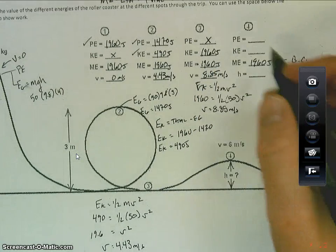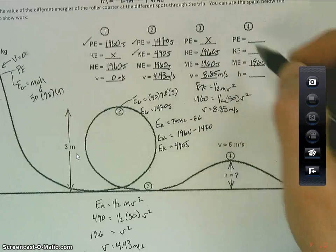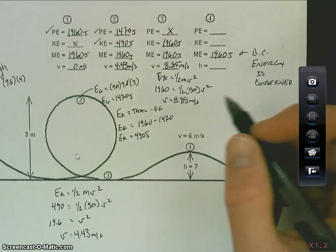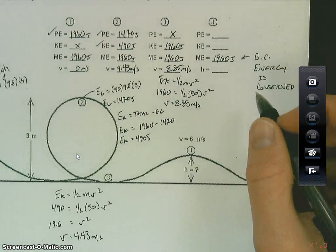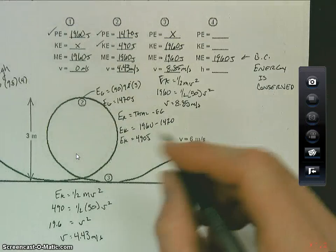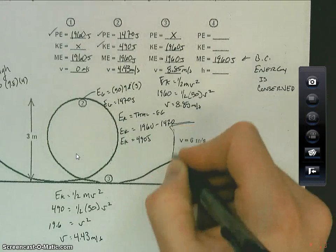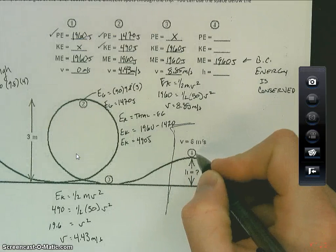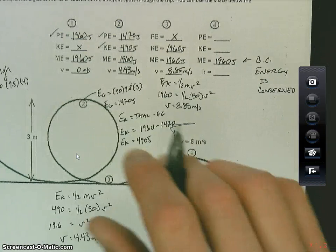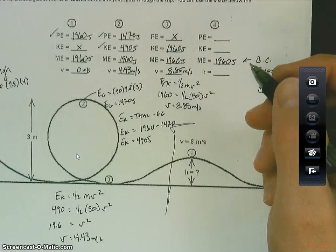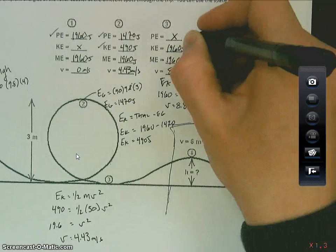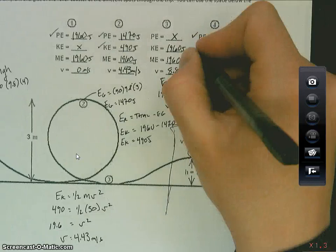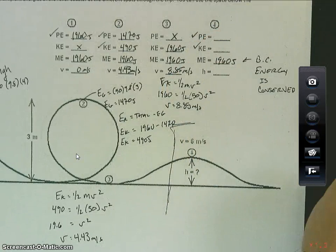Now this last portion has us do a similar deal here where we're actually trying to figure out what the height is, kinetic, and the potential energy. And so I have to look at what I have for information at that point. We don't know the height, we know the velocity, we know the mass of the car. And so right now I go to anything that I can solve for. I do know that there's potential energy because it's off the ground, and I do know that there's kinetic energy.